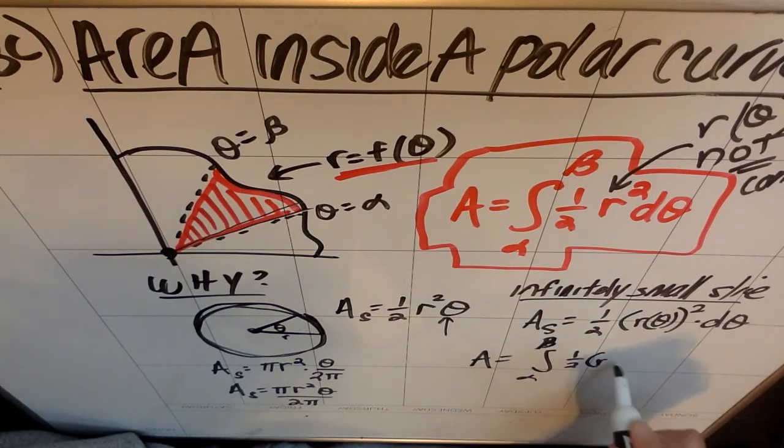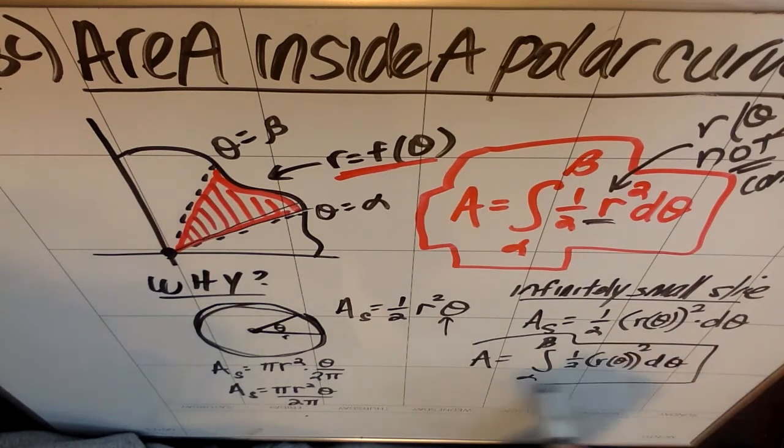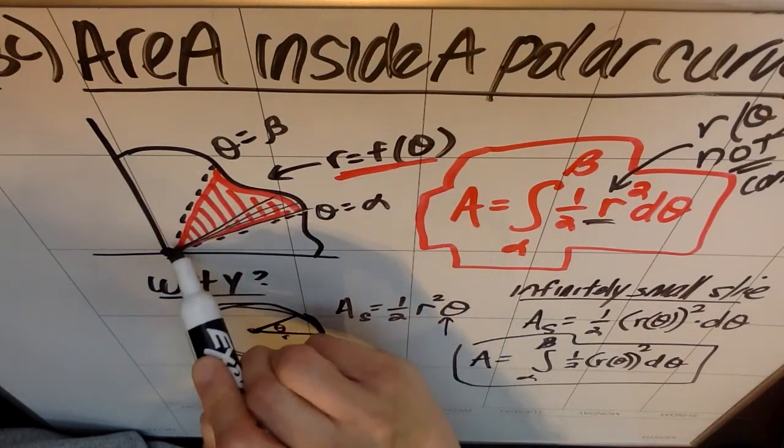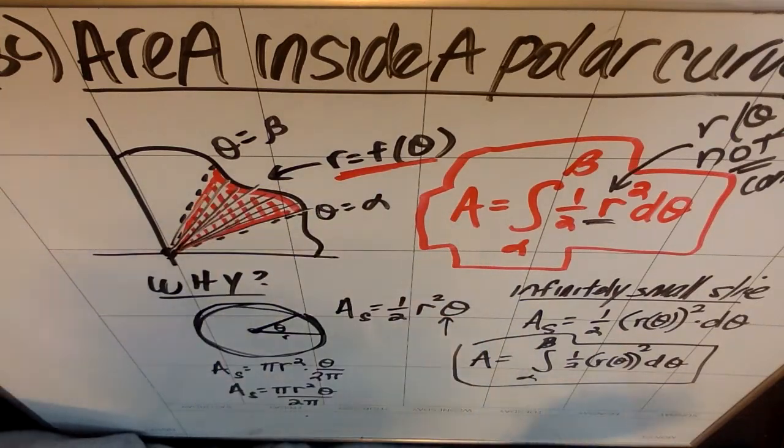Of my r of theta quantity squared, which again I can just call r as long as I know that it is a function of theta, d theta. That's where this formula comes from. It's essentially like you're taking infinitely small slices of pizza and adding up every slice of pizza with its irregular radius until you get all the pizza.